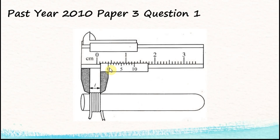This is the 2010 Paper 3 Question 1b — you are asked to take a reading from a Vernier caliper. I'm not going to teach you how to use the Vernier caliper here. If you want to learn, you can go to YouTube to search for videos; there are a lot available, and I have also made a few videos on how to take readings from a Vernier caliper.